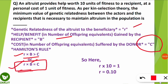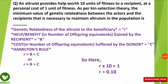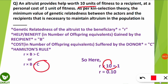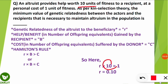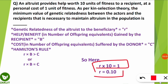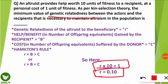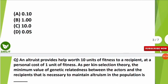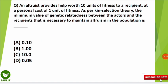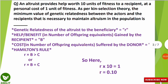We have capital B equal to 10 units (the benefit received by the recipient) and capital C equal to 1 (the personal cost to the donor). Using the formula r × B = C, we solve: r = C / B = 1 / 10 = 0.10. So the genetic relatedness between the actors and recipients is 0.10, which corresponds to option A. Note down Hamilton's Rule — it is very important.